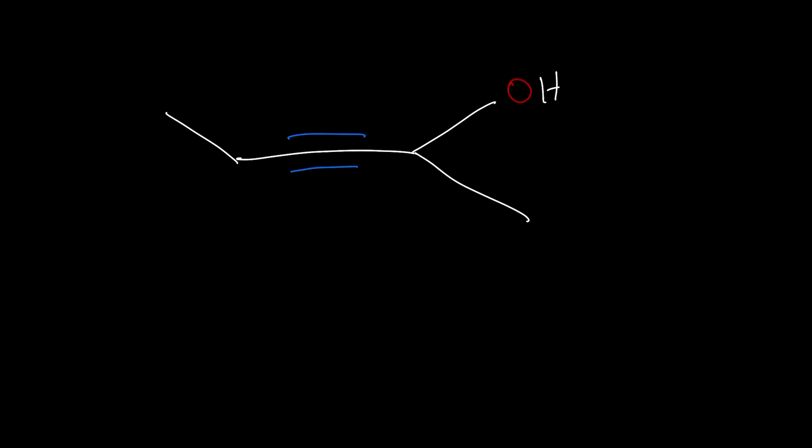How do we draw this structure? If we want to count the longest chain, we would start on this right side and go toward the left. And when we start from the right side, we also give the alcohol the lowest number group.